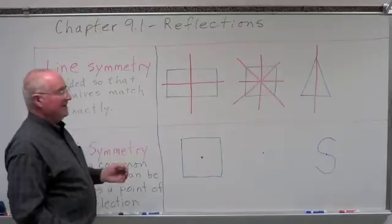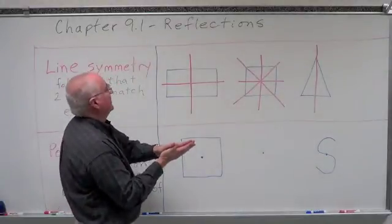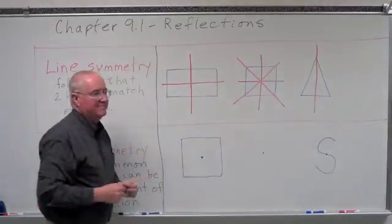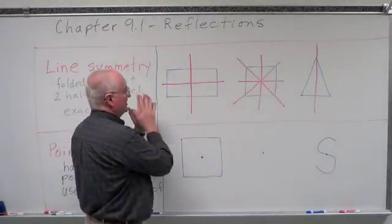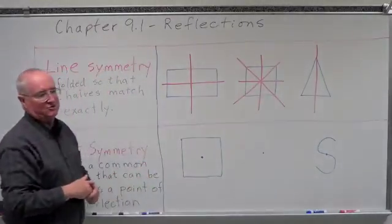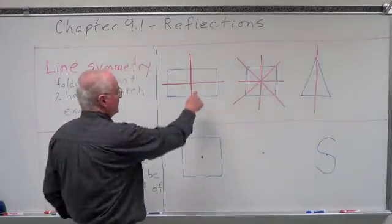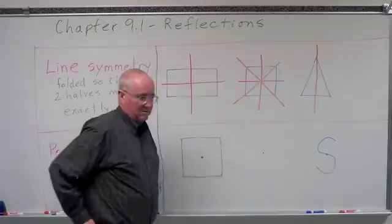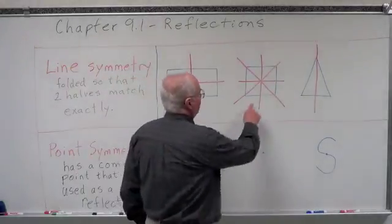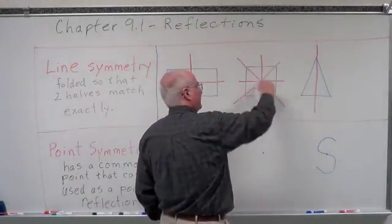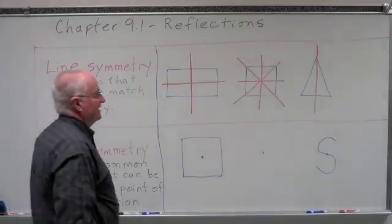Here's a rectangle. A rectangle can be folded in two ways to make two exact halves. We can fold it horizontally — a hot dog fold — and the top half exactly matches the bottom half. We can also fold it vertically — a hamburger fold — and the right side matches the left side. So it has two lines of symmetry. A square, being a rectangle, has those same two lines of symmetry plus two more through the diagonals, because all sides are equal. So a square has four lines of symmetry.